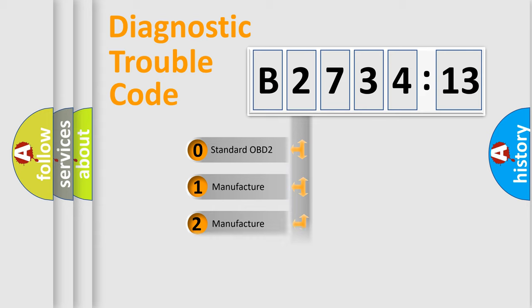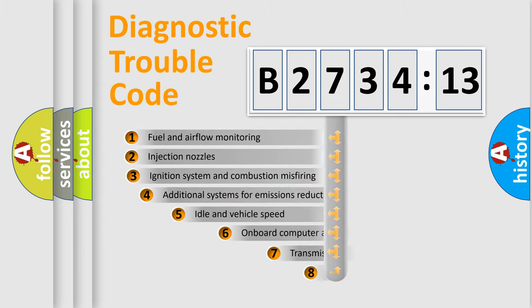If the second character is expressed as zero, it is a standardized error. In the case of numbers 1, 2, or 3, it is a more specific expression of the car-specific error.